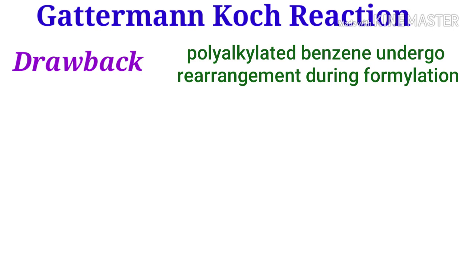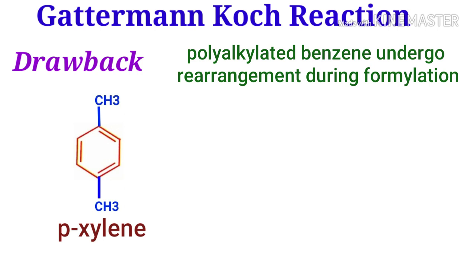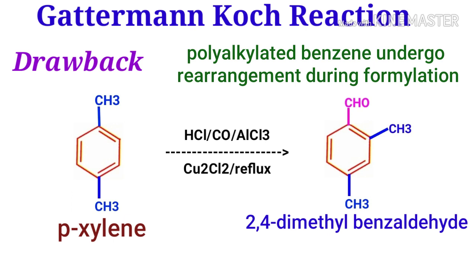Another drawback of this reaction is that polyalkylated benzenes undergo rearrangement during this formylation process. For example, para-xylene treated with the same reagents gives 2,4-dimethylbenzaldehyde, which is a rearrangement product.